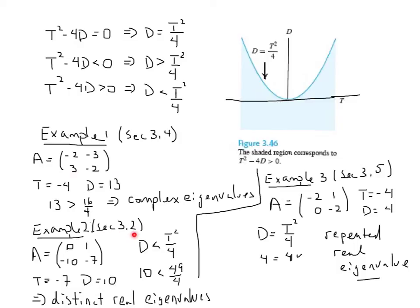In section 3.2, we worked with matrices that had two distinct real eigenvalues, but I'm not going to compute them. I'm going to compute the trace of -7 when I add these two together and the determinant of 10, and observe that in this case, the determinant is smaller than T²/4. 10 is smaller than 49/4. And of course, it tells me I've got distinct real eigenvalues, but it also tells me I'm in this blue region. And if I'm in this blue region, I know I've got distinct real eigenvalues, and that means I'm either a source, a sink, or a saddle. And we'll clarify those situations.